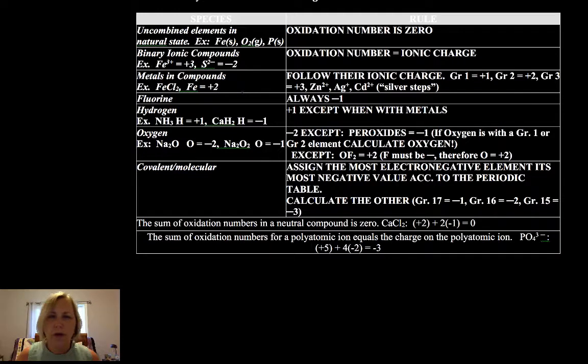Fluorine's a very firm rule. Always minus 1, period. If it's in a compound, it's minus 1. Otherwise, it's pure F2, and it's zero.